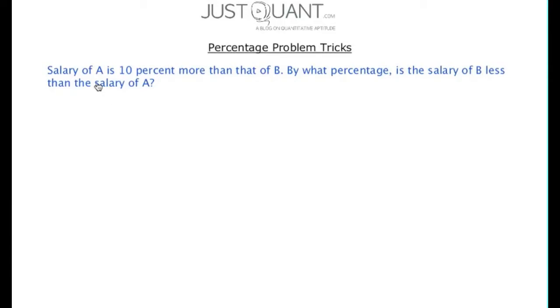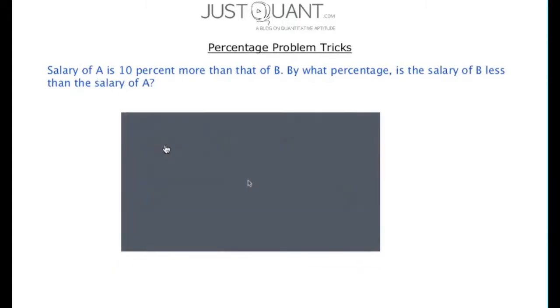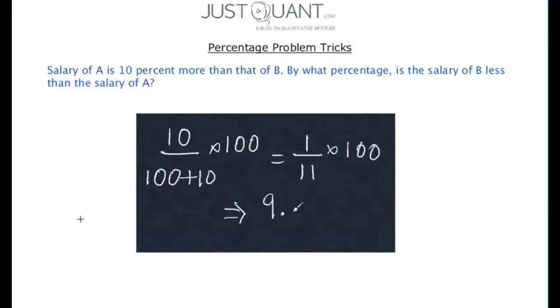In the example, since salary of A is 10% more than B, salary of B is less than A by 10/(100+10) × 100%, or 1/11 × 100%, which is 9.09%.